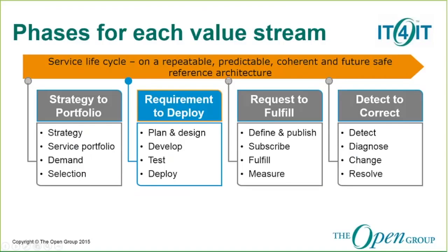Strategy to portfolio is focused on planning, defining objectives and aligning them to business and IT roadmaps. Requirements to deploy — our focus today — is focused on building or sourcing, turning that investment decision into services: planning the work, designing and developing the needed solution, whether it's in-sourced, outsourced, composite, or cloud, and then testing that application against functional, performance, or security requirements. The last step is releasing and deploying the service, either via a service catalog or into production. Request to fulfill is focused on delivering, making the services available to the consumer through a catalog. And detect to correct is focused on keeping the services running in production.